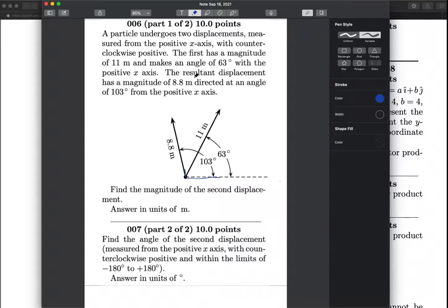Hey there, everybody. Let's talk about a vector problem from the VectorDuty homework set. A particle undergoes two displacements measured relative to the positive x-axis, with counterclockwise as positive. The first has a magnitude of some number and an angle of some value with respect to the x-axis. And the resultant displacement has a certain magnitude and a certain angle.